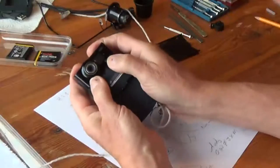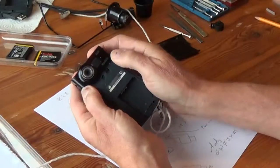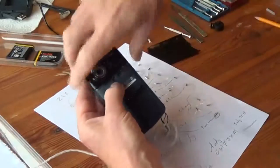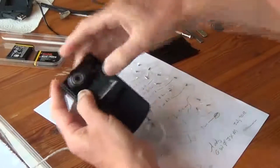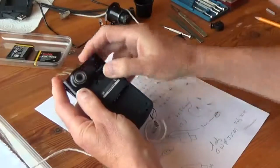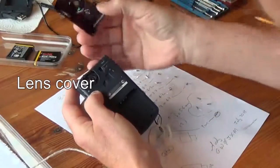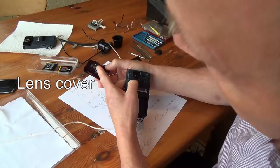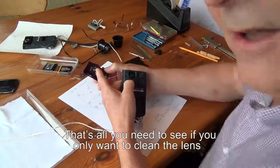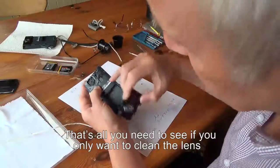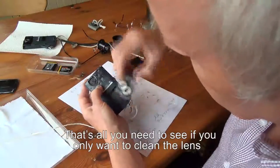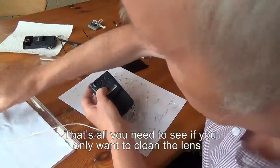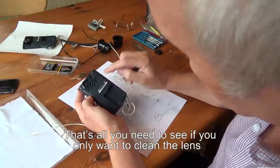Then what you do is you push that part of the body up and it only goes up that distance, about three or four millimeters, and then you can just lift that off. That comes out that way. That allows you to get to the lens so you can clean the inside of the lens. So that's the first thing.